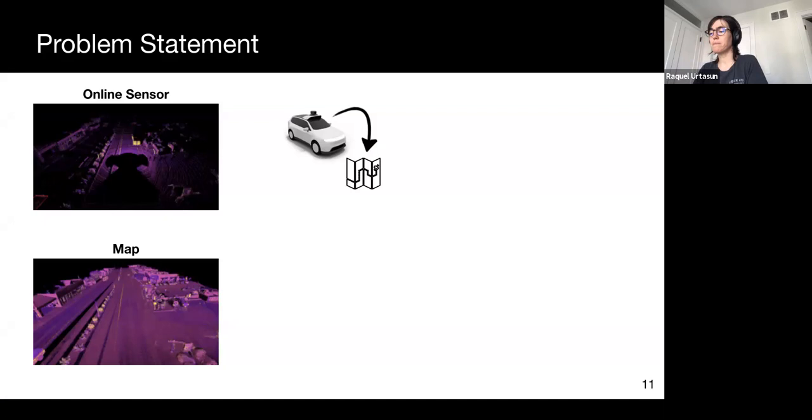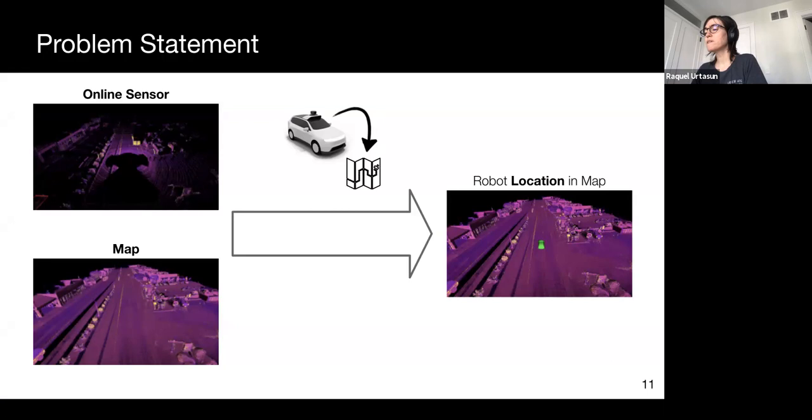The goal of localization is to, given a sensor observation and a preview map, infer the location of the car in the map. We focus explicitly on map-based localization, that is, localization within prior maps, since this is necessary in order to leverage the HD maps described in the previous section, in order to achieve maximum safety.